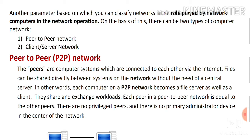In a peer-to-peer network, the peers are computer systems which are connected to each other via the internet. Files can be shared directly between systems on the network without the need of a central server. A peer is an individual computer which is part of a network, connected via the internet — what we can also call a host or node.